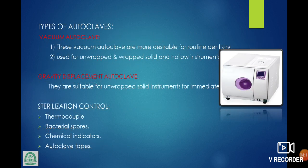Types of autoclave: vacuum autoclave and gravity displacement autoclave. Vacuum autoclave is more desirable for routine dentistry; used for unwrapped and wrapped solid and hollow instruments. Gravity displacement autoclave is suitable for unwrapped solid instruments for immediate use. Sterilization controls include thermocouple, bacteria spore, chemical indicator autoclave tapes or other sterilization controls.